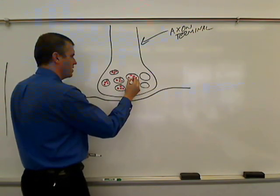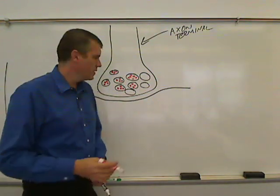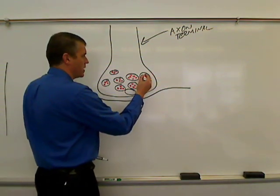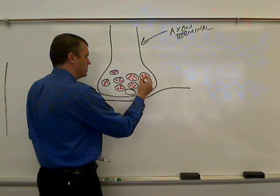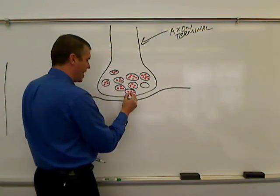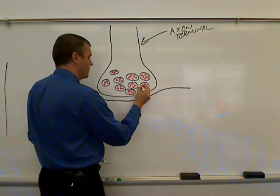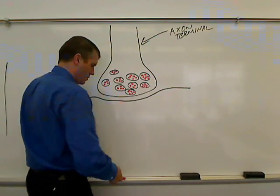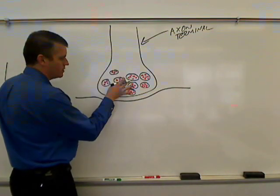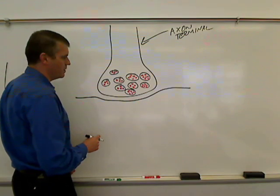Neurotransmitter is another thing that varies. Remember when we talked about stimulating muscle cells, the neurotransmitter was acetylcholine. But there are different types of neurotransmitters — there's norepinephrine, there's acetylcholine, there's GABA, and a bunch of other ones. So we've got synaptic vesicles filled with neurotransmitter.